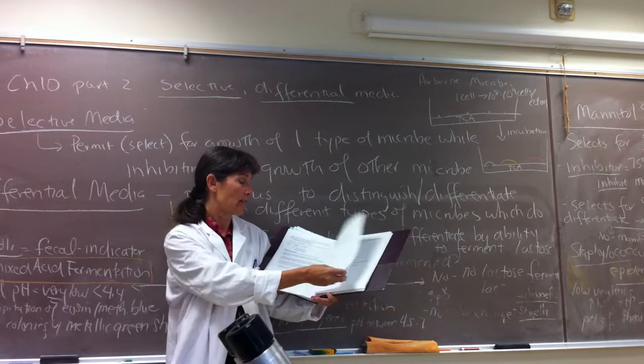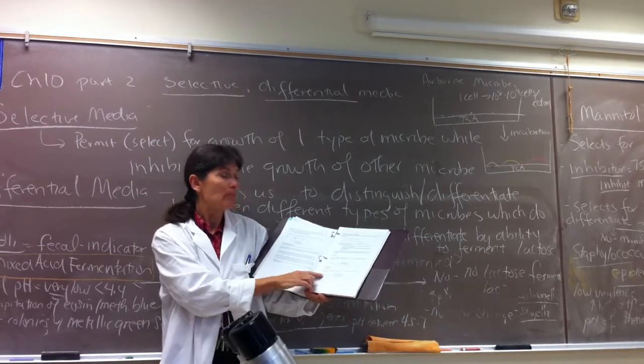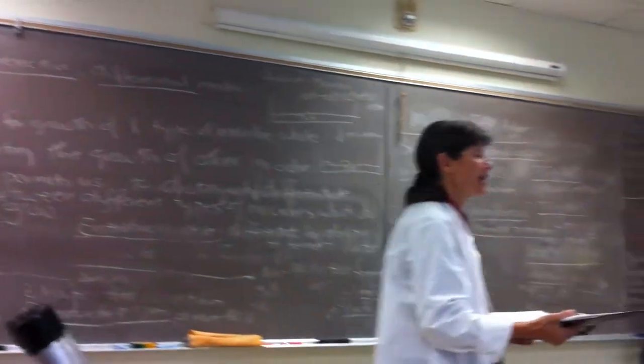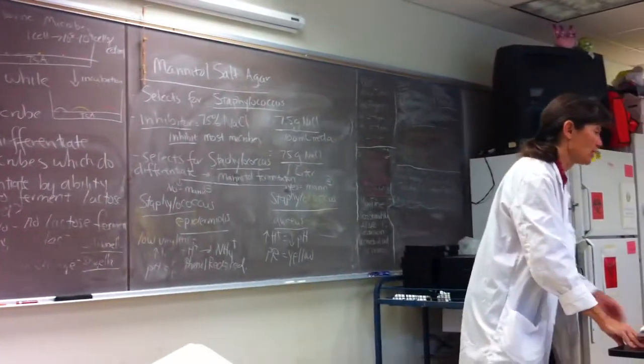So that's the total number of colonies. Now table two, you're going to count the total number of different types of colonies, the varieties of colonies.